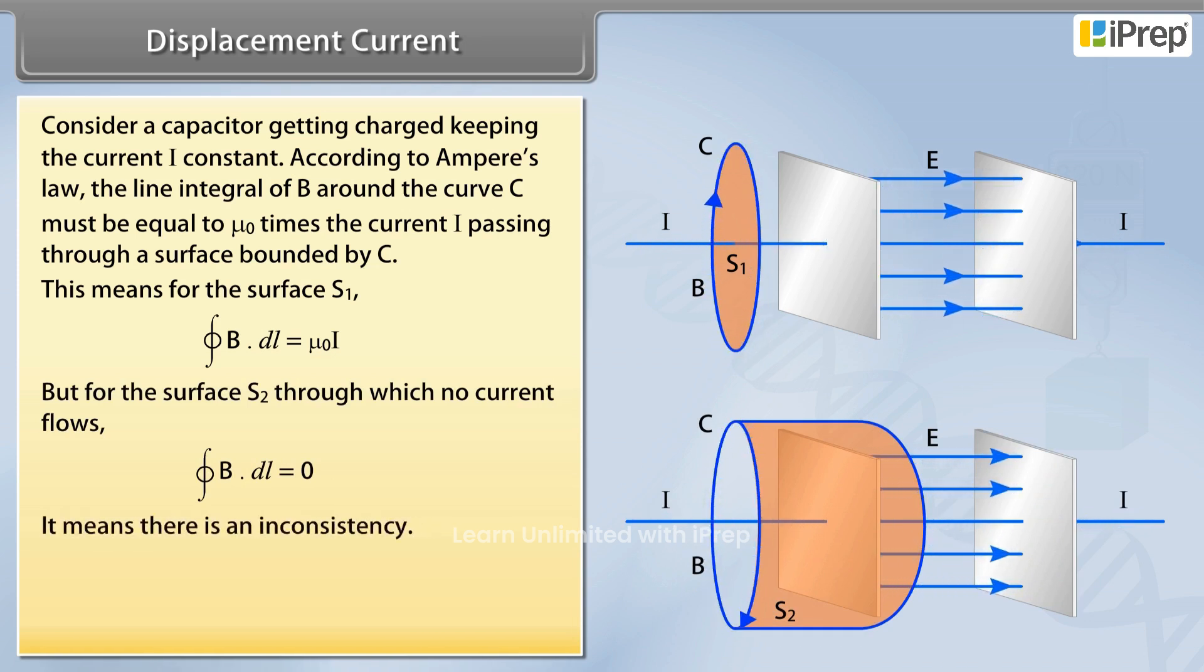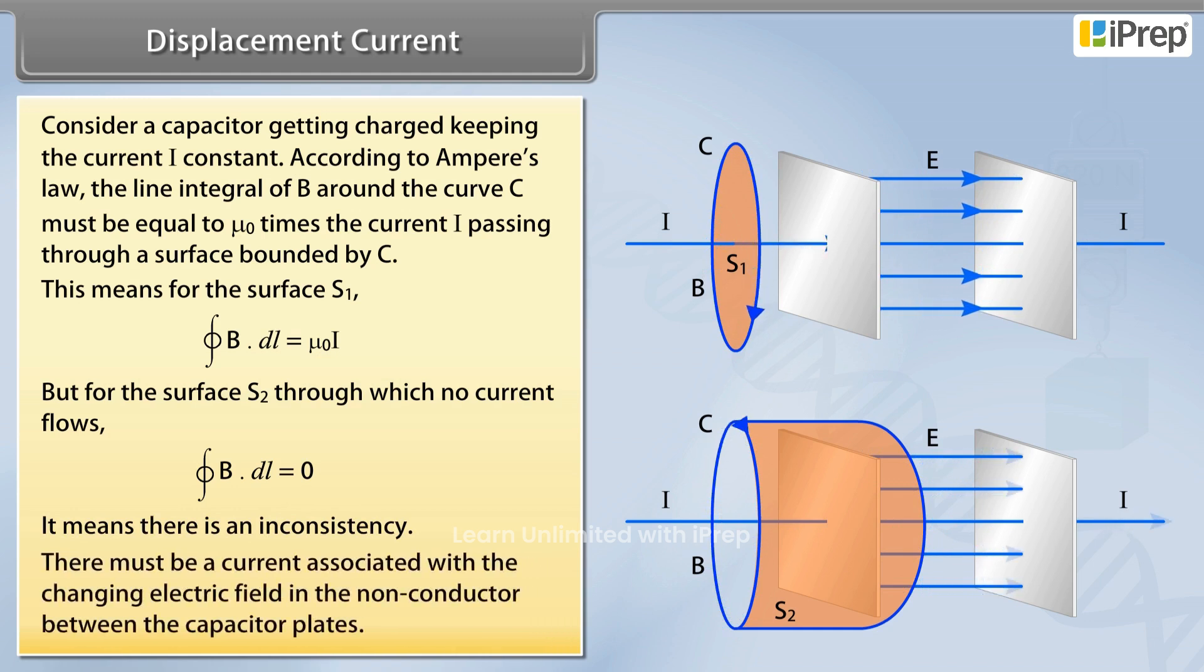It means there is an inconsistency. There must be a current associated with the changing electric field in the non-conductor between the capacitor plates.